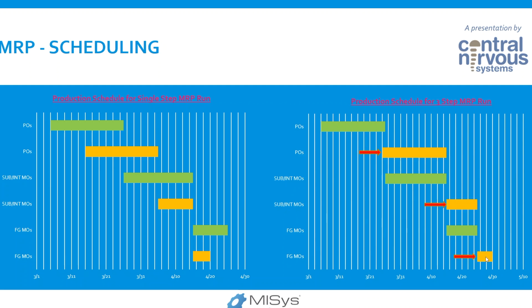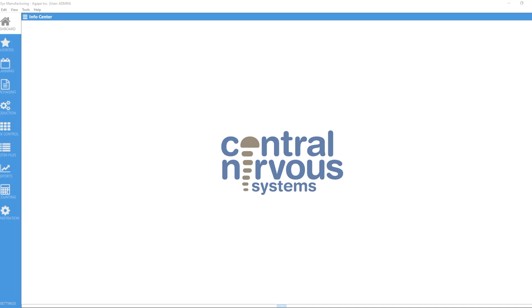That way, after running the first step and getting our finished good MOs as shown in the first graph, we can decide to push that one a little bit out or in depending on our capacity. When we run the second and third steps, you will notice that all of these yellow or orange bars are adjusted according to where the finished good MO was scheduled. They look at the start date of the finished good MO and make sure that the sub-assembly or intermediary MO is completed on the same day as the start of the finished good MO. This fine-tuning trickles back all the way to the purchase orders — and this is one of the advantages of running the three-step MRP.